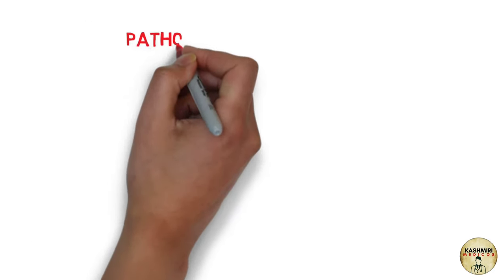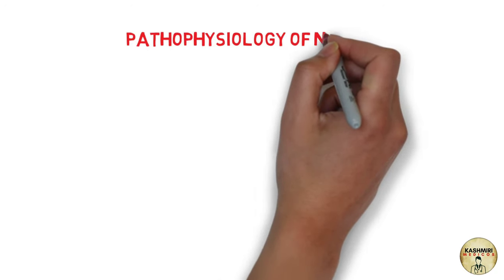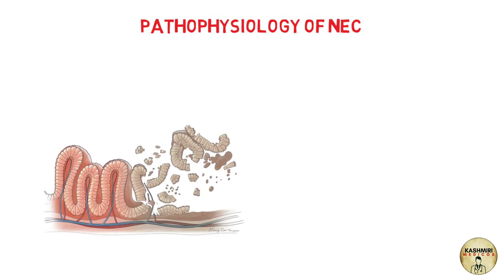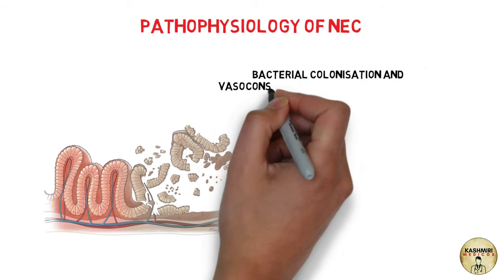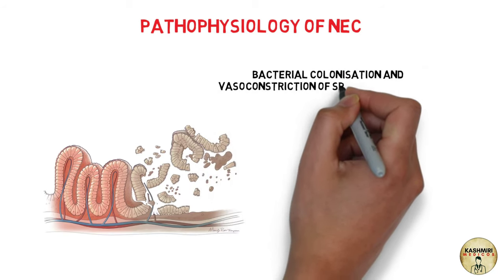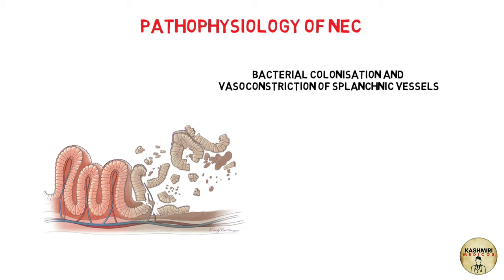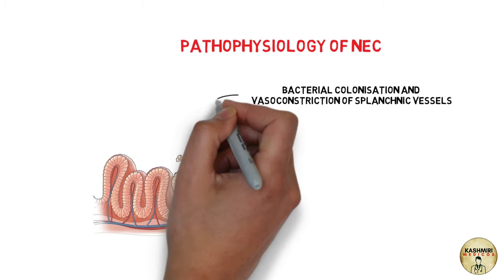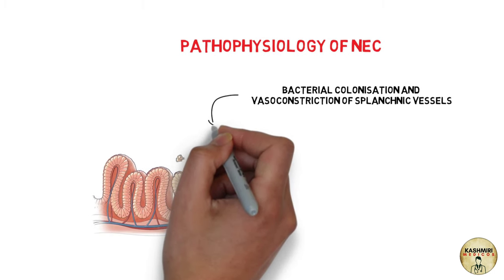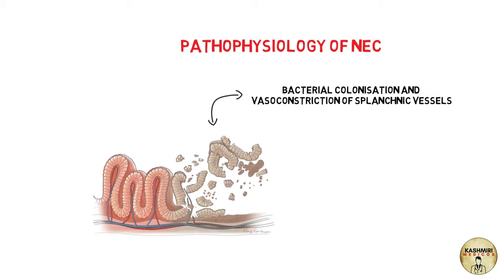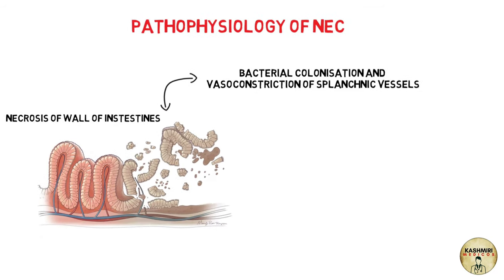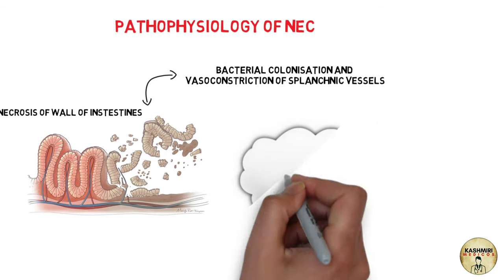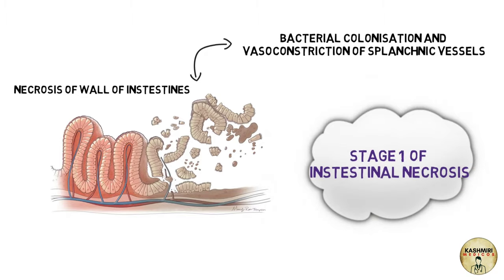Now let's discuss the pathophysiology of necrotizing enterocolitis. Firstly, there is bacterial colonization of the gut resulting from prematurity or top feeds, and then there is vasoconstriction of the splanchnic vessels. Both of these lead to necrosis of the epithelium of the intestines. This is stage one, which is known as intestinal necrosis.